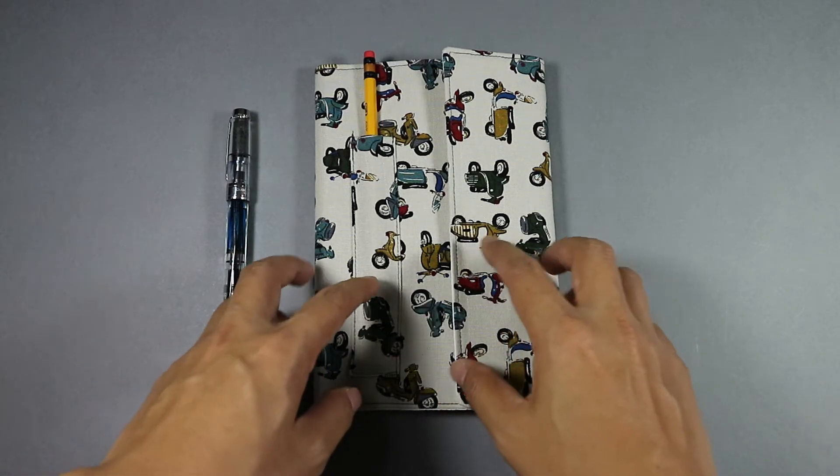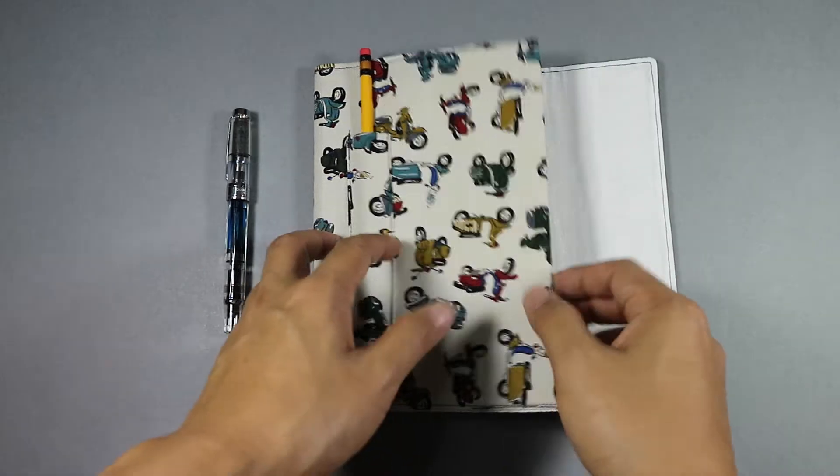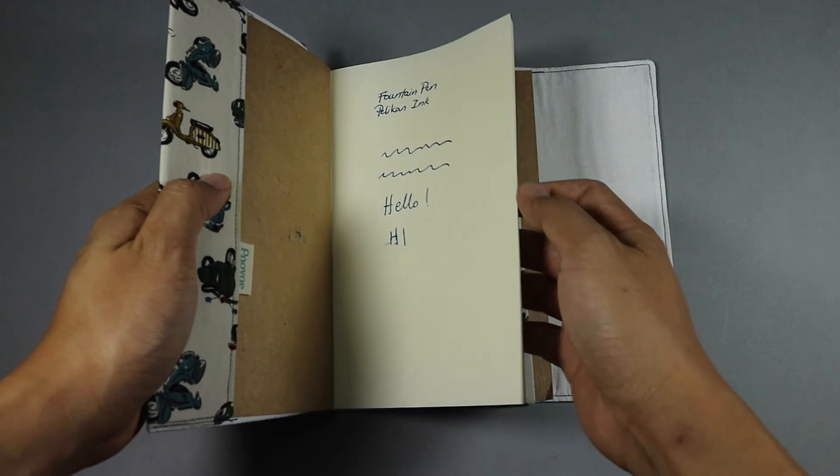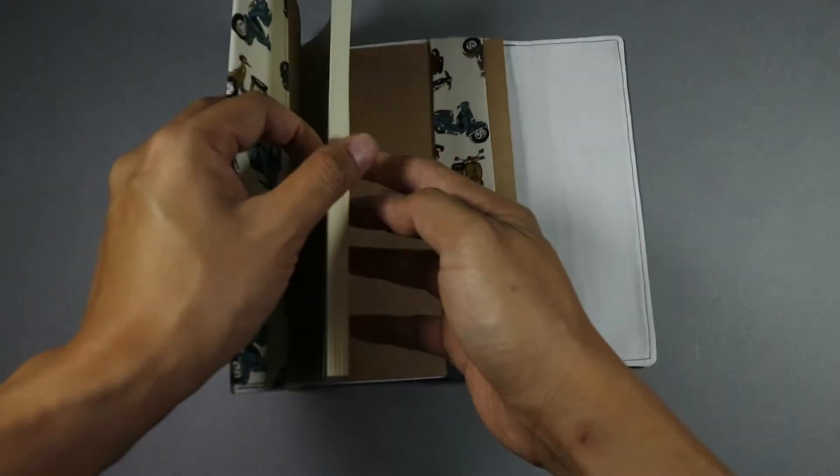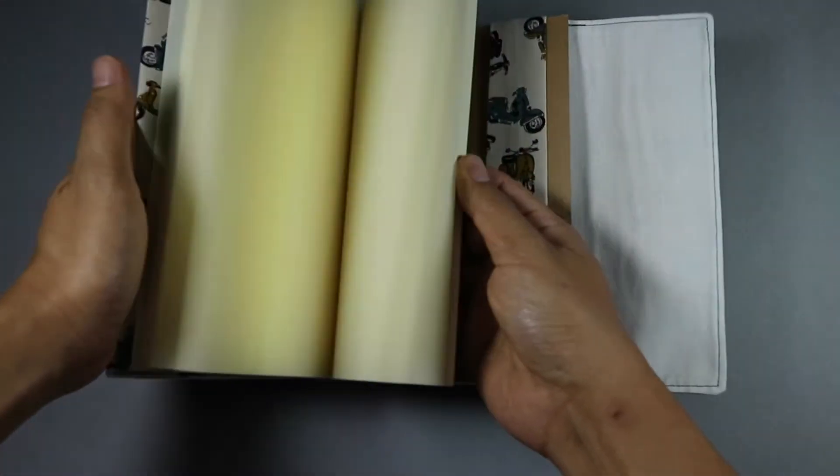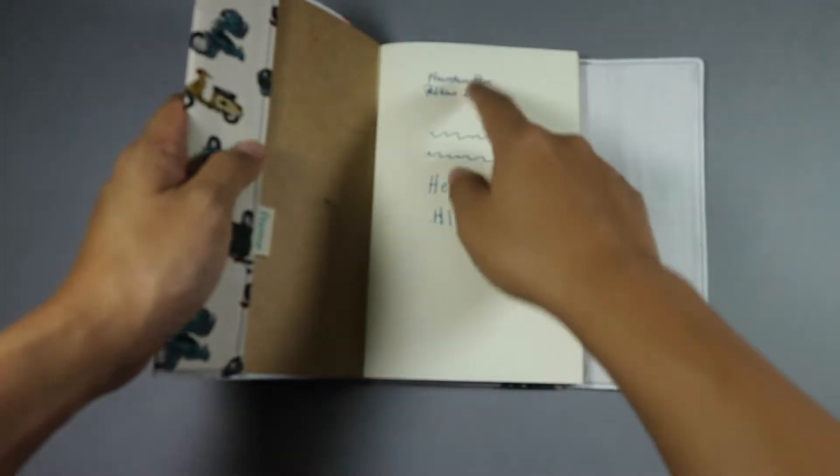This is the Pinove cloth covered notebook. It comes with the cover, which is reusable, and it comes with a notebook. This notebook is 160 pages, the color is cream, and it's made of uncoated wood-free paper.